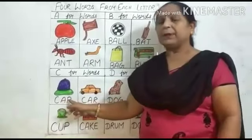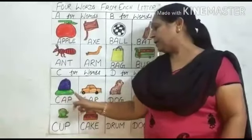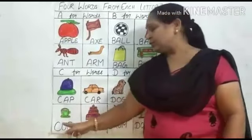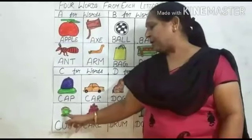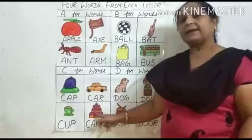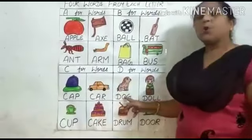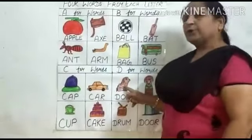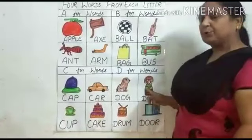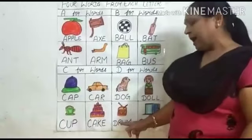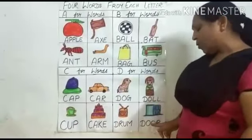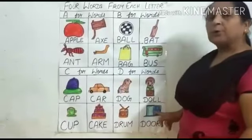C-A-P. Cap. Cap means topi. C-A-R. Car. Car means gari. C-U-P. Cup. Cup means pyaala. C-A-K-E. Cake. Cake means cake. D-O-G. Dog. Dog means kutta. D-O-L-L. Doll. Doll means guriyah. D-R-U-M. Drum. Drum means drum. D-O-R. Door. Door means darwaja.